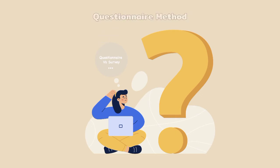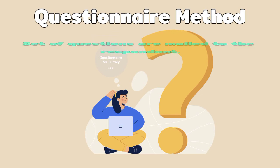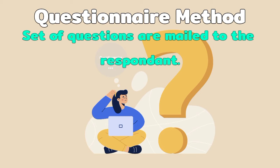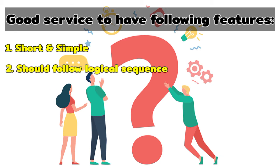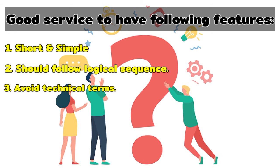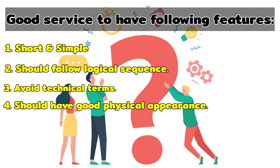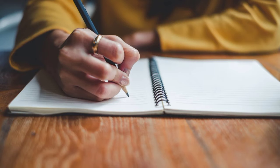The third method is the questionnaire method, in which a set of questions are mailed to the respondent. They should read, reply, and return the questionnaire. A good survey should be short and simple, follow a logical sequence, avoid technical terms, and have good physical appearance — such as color and quality of paper — to attract the attention of the respondent.